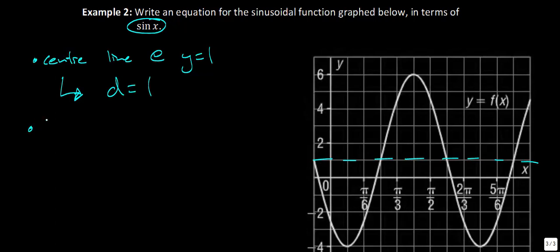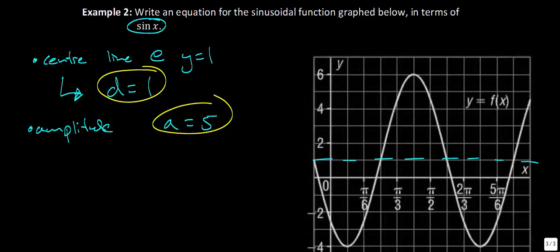Next, the amplitude: how many units above the center line? It's 5 above and 5 below, so a = 5. Now let's talk about the period. To find it, I look for two corresponding points that land on nice lattice points. The x-axis has marks at π/6, π/3, π/2. The increment between marks is half of π/6, which is π/12. So each small division is π/12.